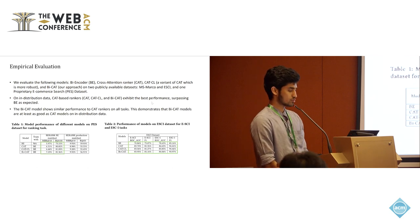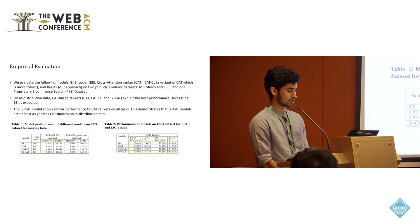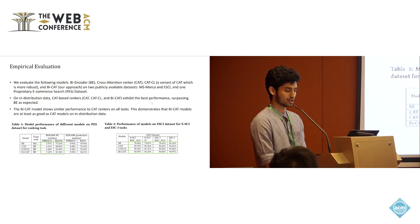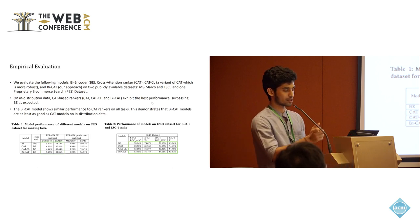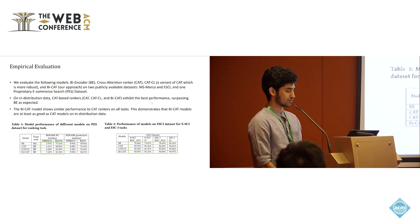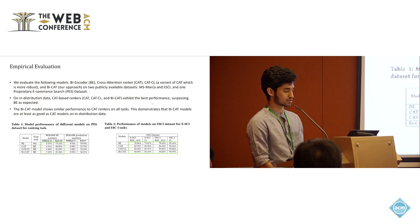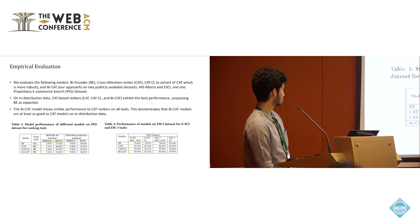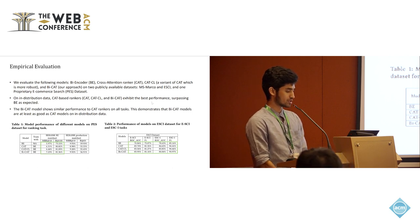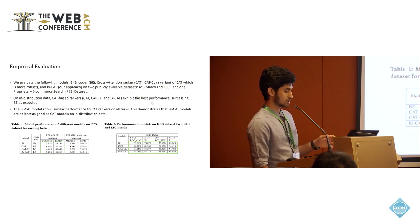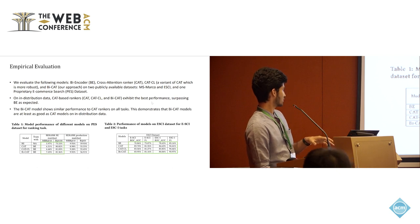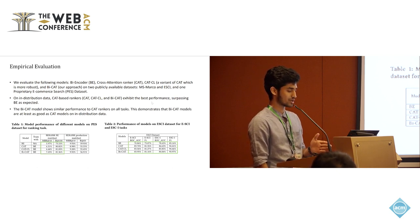Now let's discuss the empirical evaluation. We evaluate the following models: first, the BiEncoder; second, the cross-attention transformer ranker; third, CAT-CL, which is similar to the cross-attention ranker but a robustified version that uses contrastive loss in addition to ranking loss to improve robustness; and finally BiCat, our approach, on multiple datasets including a proprietary e-commerce search dataset. Looking at the tables, on in-distribution data, CAT-based rankers show the best performance, surpassing the BiEncoder as expected. The BiCat model shows similar performance to CAT rankers on all tasks, confirming that BiCat models are as good as CAT models on in-distribution data.